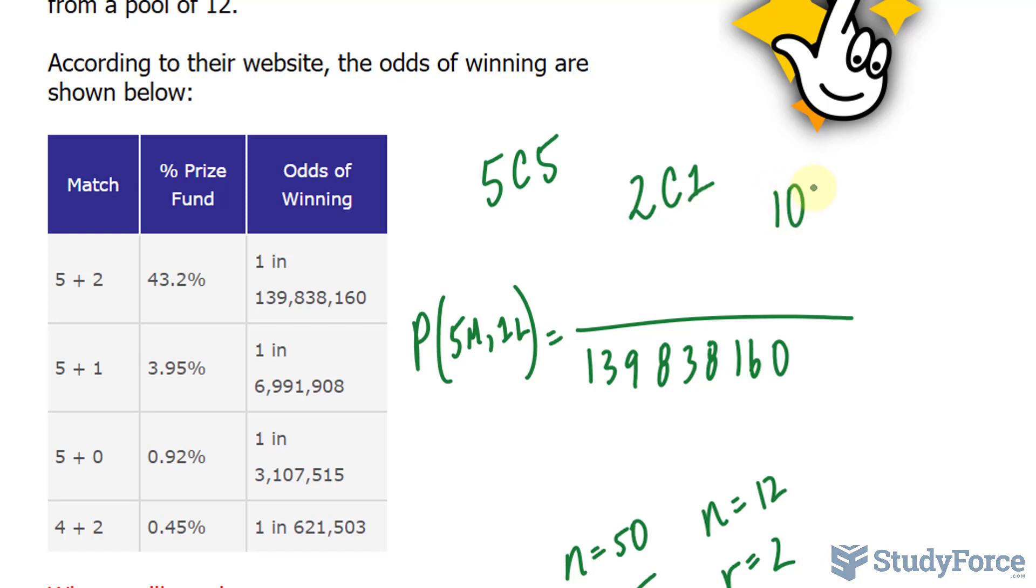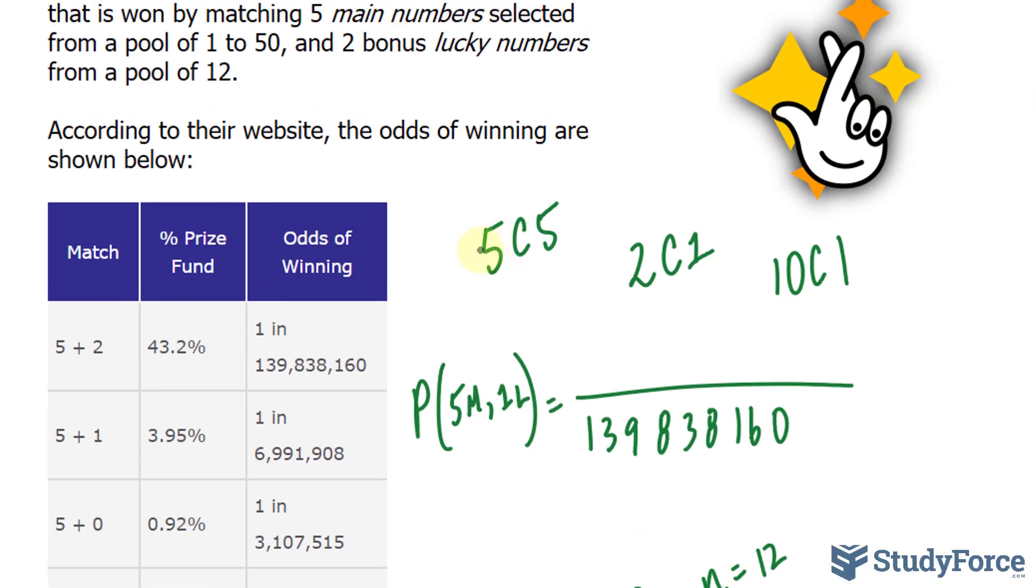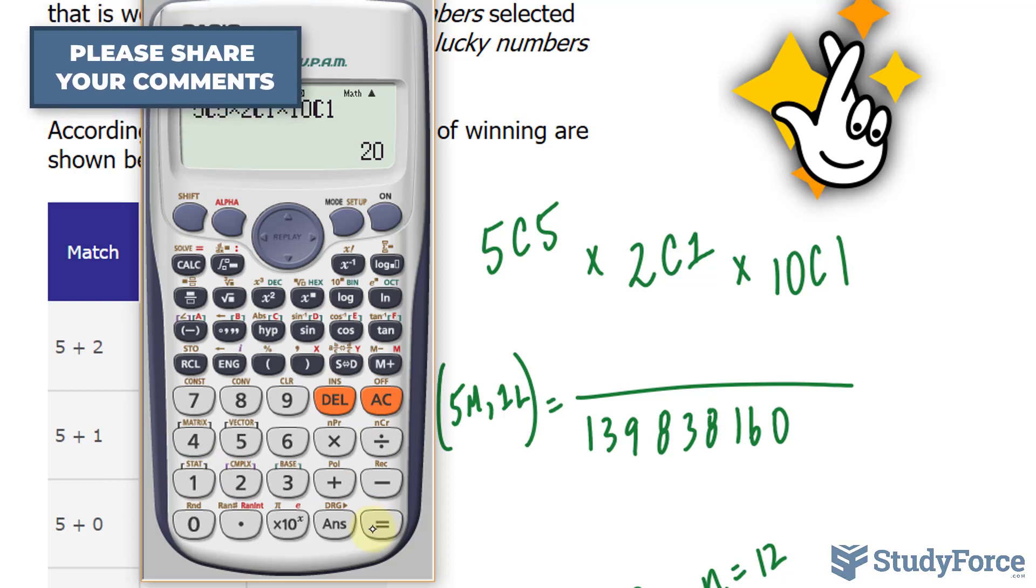We represent that as 10 choose 1. Once again, according to the fundamental counting principle, the number of ways in which a series of successive things can occur is found by multiplying the number of ways. So we multiply 5 choose 5, times 2 choose 1, times 10 choose 1, and that represents the top number of our probability. Using our calculator, 5 choose 5, times 2 choose 1, times 10 choose 1. That's 20.